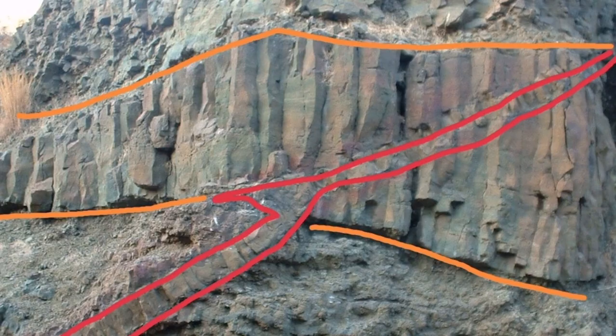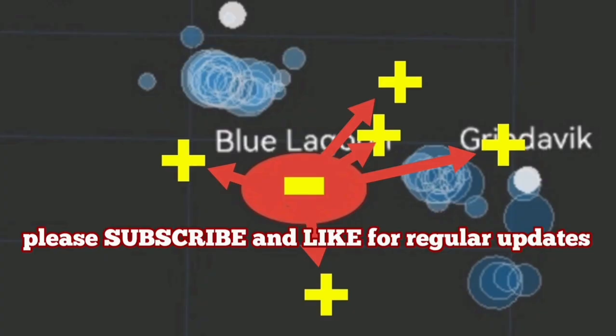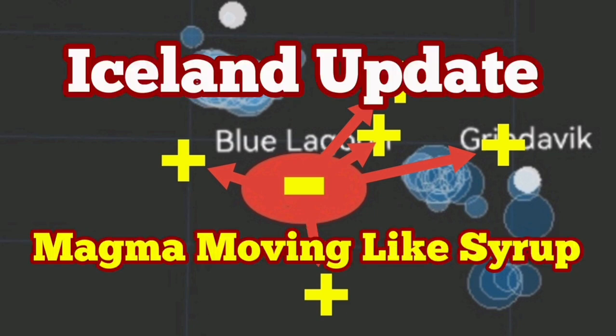This is the Troodos Mountains of Cyprus. Practically, what we are seeing through this seismic activity and GPS data is the formation of the ophiolite body at depth. Very similar, the sequence.